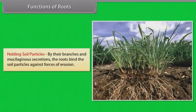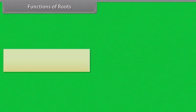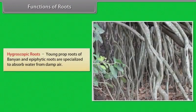Holding soil particles: By their branches and mucilaginous secretions, the roots bind the soil particles against forces of erosion. Hygroscopic roots: Young prop roots of banyan and epiphytic roots are specialized to absorb water from damp air.